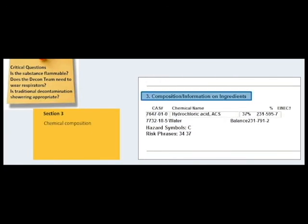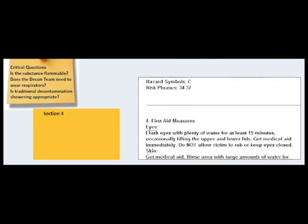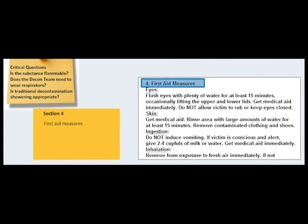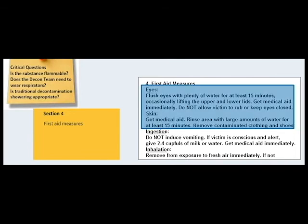Section 3, Composition and Information on Ingredients: This information is very useful if dealing with a commercial product made up of several ingredients. In this case, we are only dealing with hydrochloric acid and water. Section 4, First Aid Measures: This section describes the initial first aid that should be provided to an individual exposed to the chemical. For hydrochloric acid, this includes flushing the eyes and skin with plenty of water for several minutes. This confirms for Jamie that water decontamination should occur immediately after clothing removal. She reports this information to the decon unit leader.